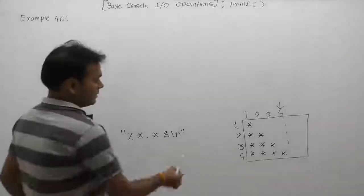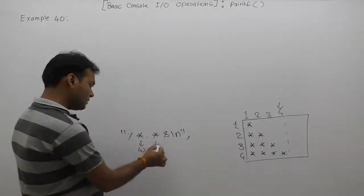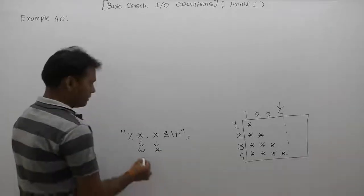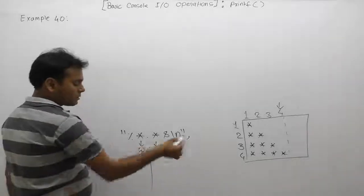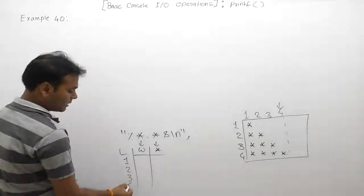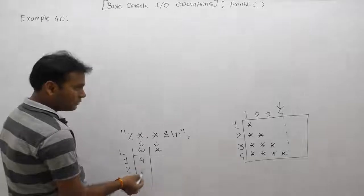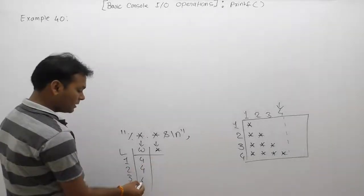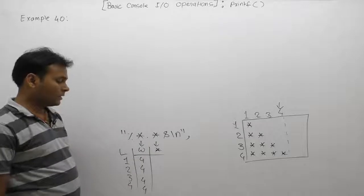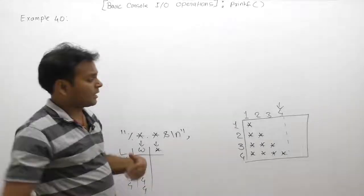In the general syntax with slash n, the first star will represent the total bits and the second star will represent the total number of printed characters. There are four lines total. In line one, the total width is four. Line two width is also four. Line three width is four. Line four width is also four. So the width value is fixed across all lines, meaning the same width is used in every case.